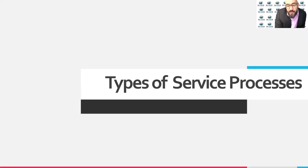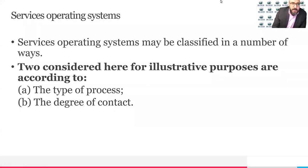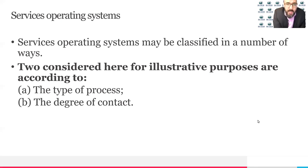When you initiate a business or a service, you need to think about what type of process you need to implement. Based on that, you could make several decisions. There are different ways to classify the service system, but there are mainly two criteria we use: the first is the type of process, and the second is the degree of contact.